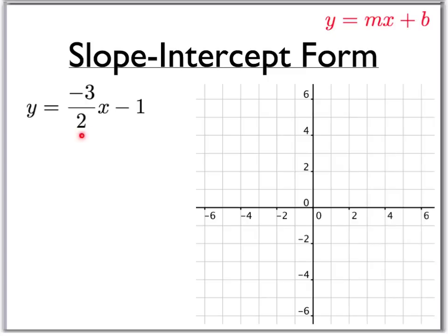In this example, our job is to graph the line y equals negative 3 over 2x minus 1.